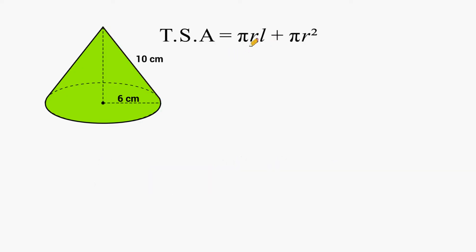The value of r, our radius, is going to be 6 centimeters, and the slant height of our cone is 10 centimeters. The height of the cone is a separate length — we do not use it in our formula, because the height is not on the surface of the cone. So we just use the slant height.